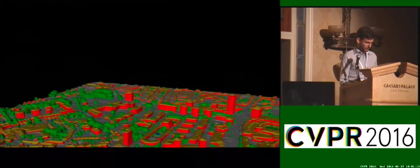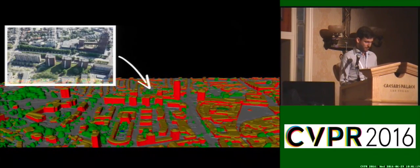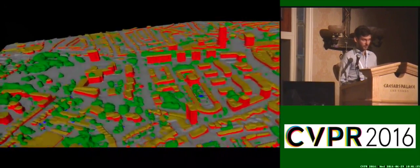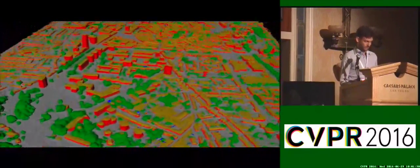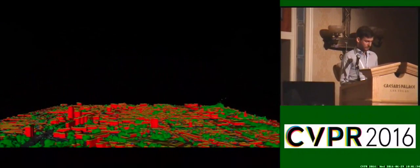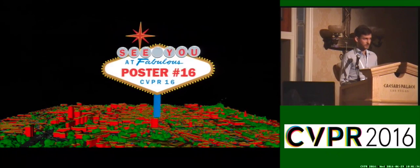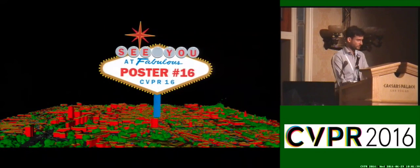A second zoom-in of the model compared to the input data shows the tower which has been visible throughout the whole presentation. It is a very flat region, as is typical for the Netherlands. In more complex terrain and topography, we actually expect to gain even higher savings in memory. We are happy to discuss details at our poster — thank you.